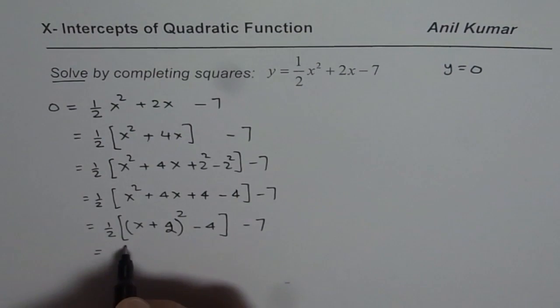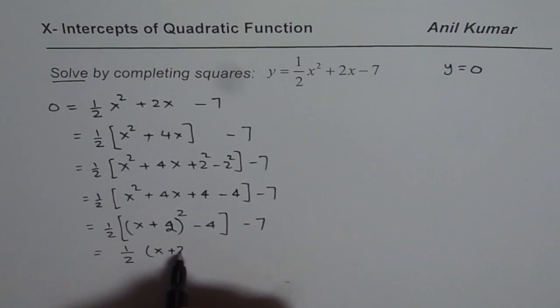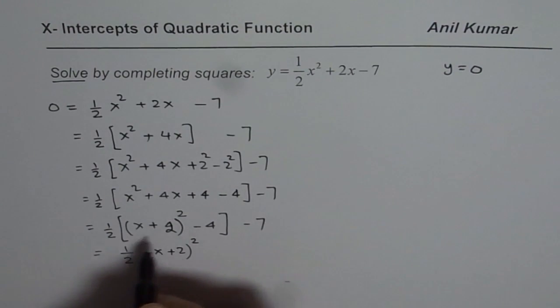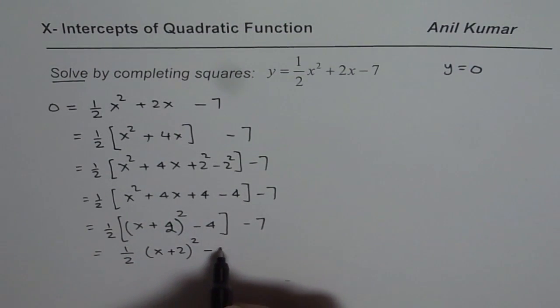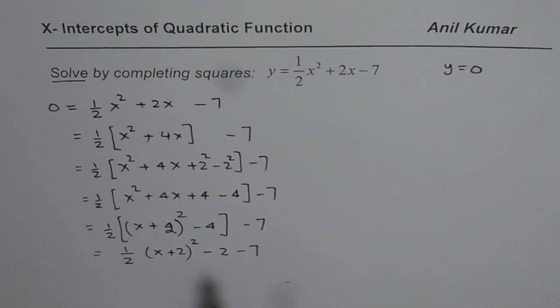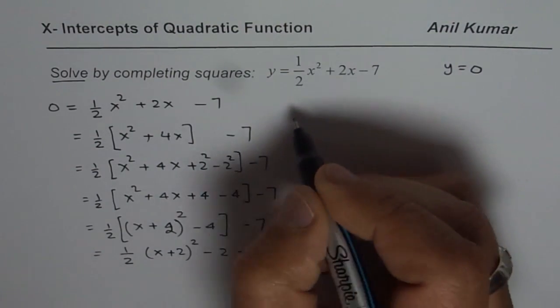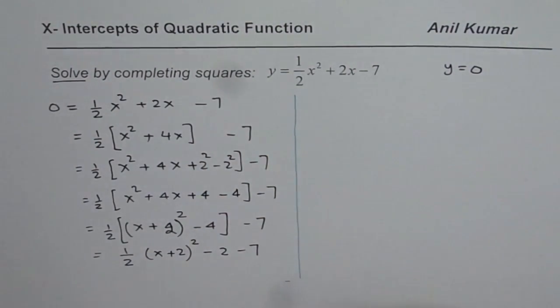Now we can open the bracket and write this in the vertex form, which is half of x plus 2 whole squared. When you do half of minus 4, you get minus 2, minus 7. So I can combine these terms and write down the equation in the vertex form.